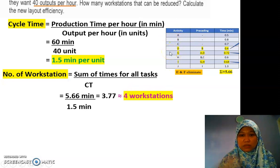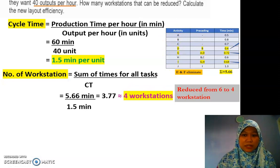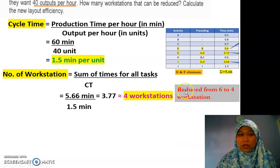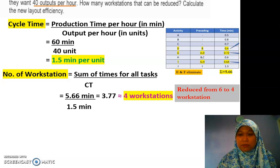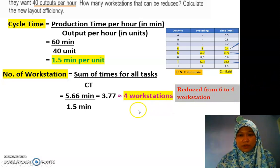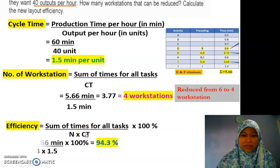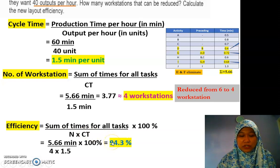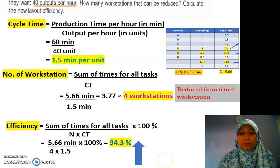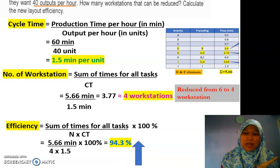So all these tasks are going to fit into 4 workstations. From the table B they previously had 6 workstations, and now they're reduced to 4. Since the sum of tasks changed and CT also changed, the efficiency changes too — it becomes 94.3%, showing an improvement compared to the previous calculation.